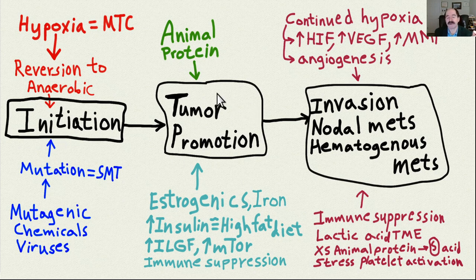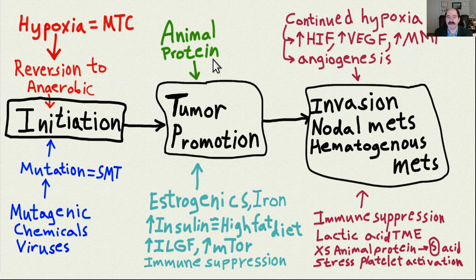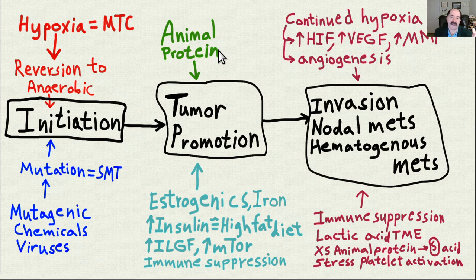The game to survive cancer is won or lost in the promotion phase. T. Colin Campbell's book The China Study talks about animal protein — you don't want it, not one bite, because it's the most powerful cancer promoter of anything in the whole world, more than all those carcinogenic chemicals and viruses. His entire China Study is about that, and he talks about it extensively in his other books and lectures online.